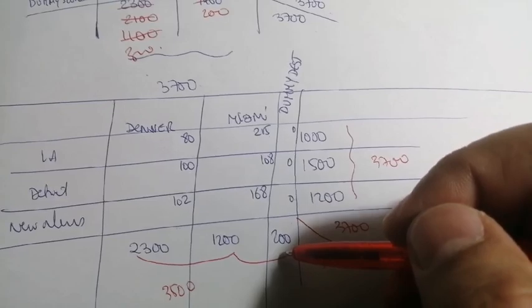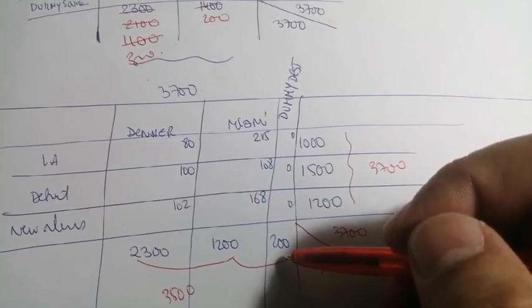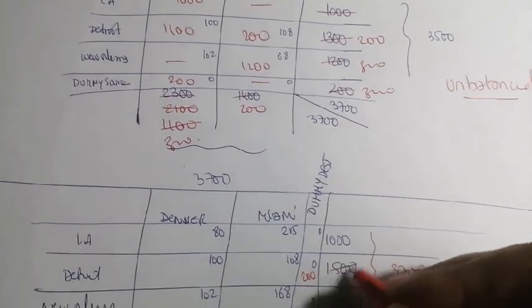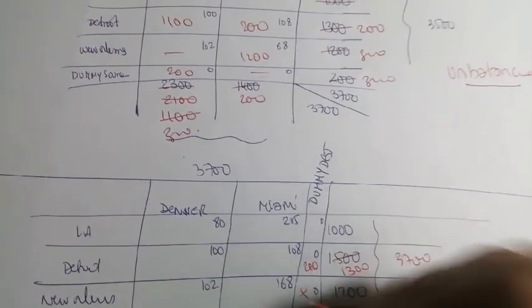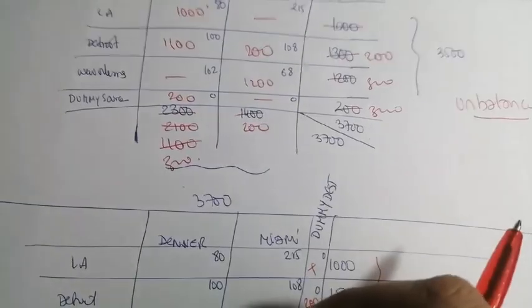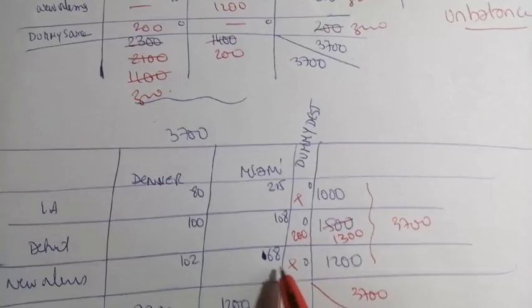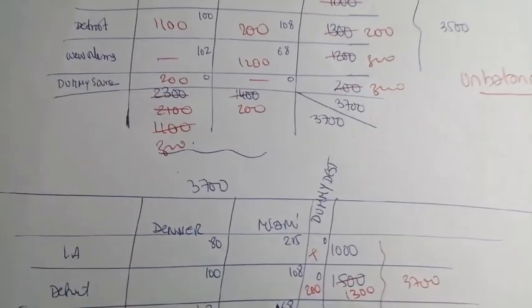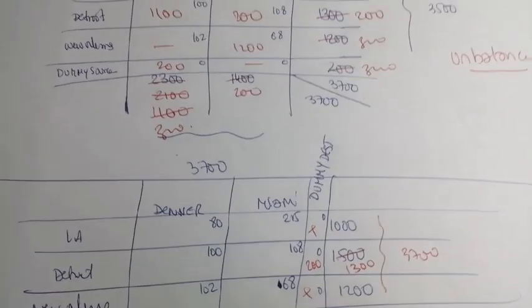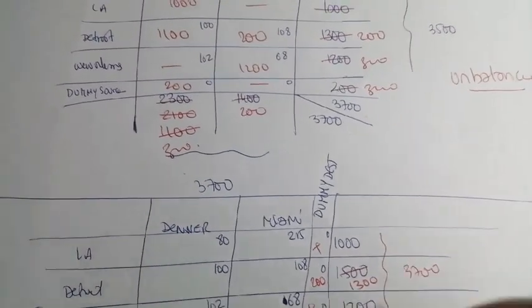So this one is 200, 1,300. Then we move—sorry, this is 68—and then we move to this one. So it's 1,200 and this is 1,200. Here we cancel it, and we don't need anything of it anymore.